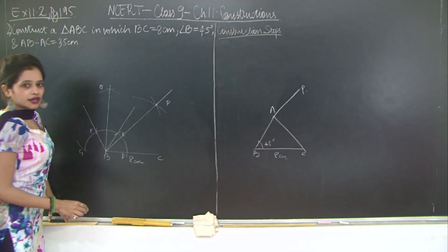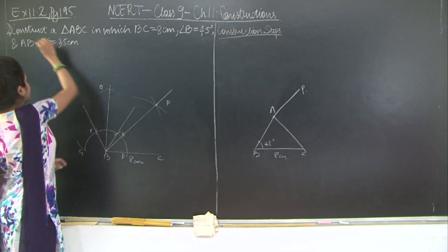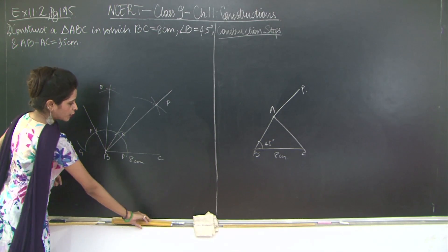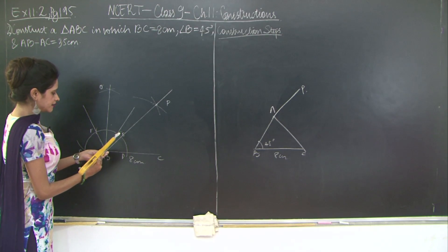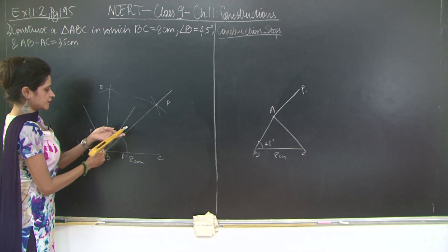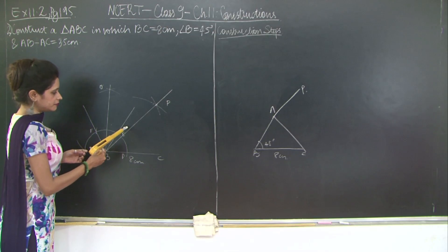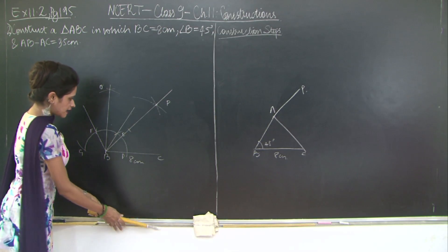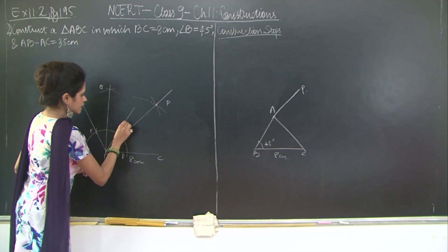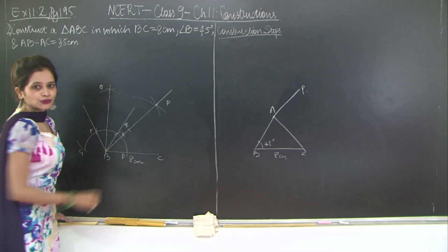Now what I'm going to do is this length AB minus AC is equal to 3.5 centimeters. I am going to cut an arc of this length here on BP, and I'll call this arc as Q, and I will join QC.